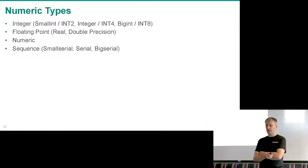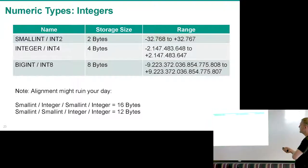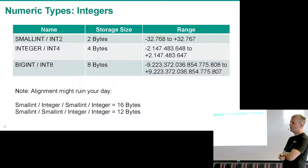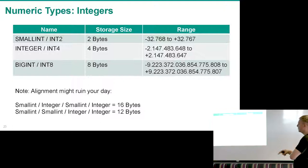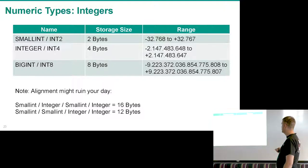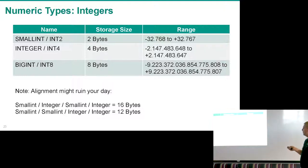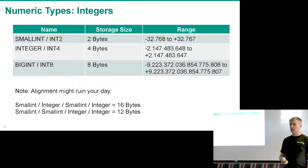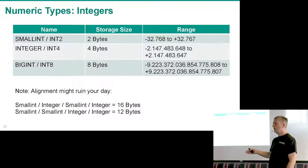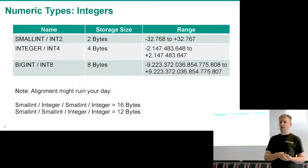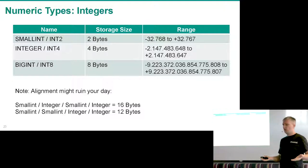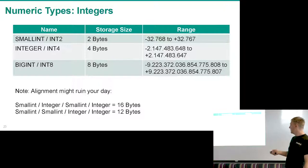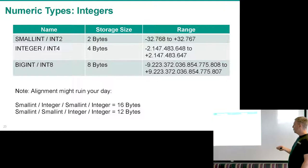We have three different numeric integer types. First, smallint — two bytes, ranging from roughly -32K to +32K. Then integer — four bytes, -2 billion to +2 billion, always a signed integer. And bigint — eight bytes, an extremely large range. One thing to mention: be careful how you align your columns, because most people like to align column names by usage and then do SELECT *.